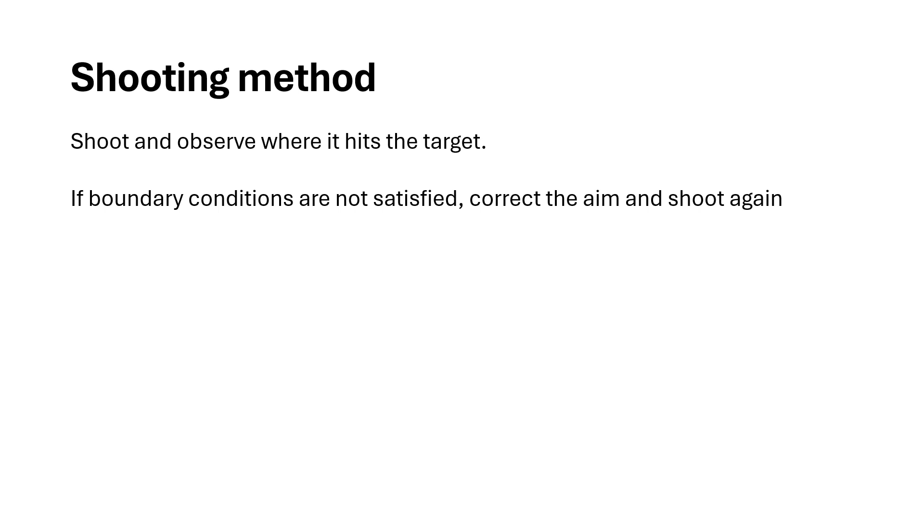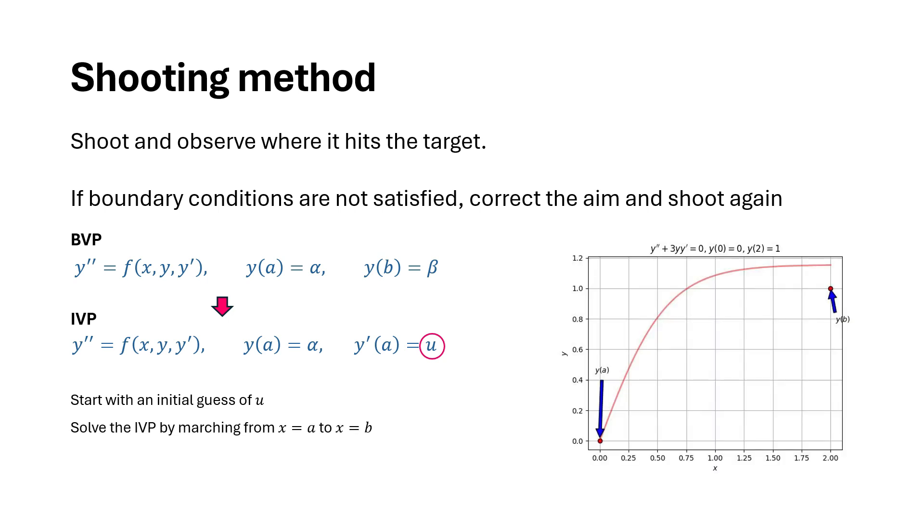For example, given a boundary value problem, we first convert it into an initial value problem. The key to success here is that we find the correct value of u. So we start with an initial guess of u and then we solve the initial value problem by marching from x equals a to x equals b.